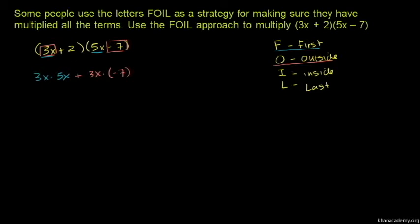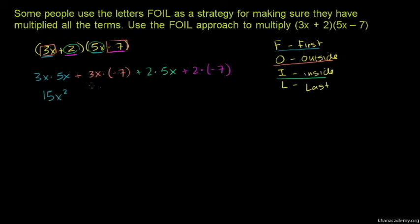You multiply the inside terms: 2x times 5x. Then you multiply the last terms: 2x times minus 7. So 3x times negative 7 is negative 21x. 2x times 5x is positive 10x. 2x times negative 7 is negative 14.